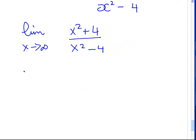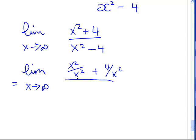What we are going to do here is divide by the highest power. That would ordinarily give us an indeterminate answer. So, we will go to the highest power and divide through that. The highest power here is x squared. So, x squared over x squared plus 4 over x squared, x squared over x squared minus 4 over x squared.